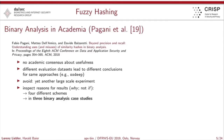Fabio Paggini published a paper last year called 'Beyond Precision and Recall: Understanding Uses and Misuses of Similarity Hashes in Binary Analysis.' The paper is really good because he tries to inspect why different schemes fail in specific scenarios. There's really no consensus in academia on whether those schemes are useful or not. Therefore, Fabio introduced three different scenarios for four different schemes, and those scenarios are the foundation for my research.